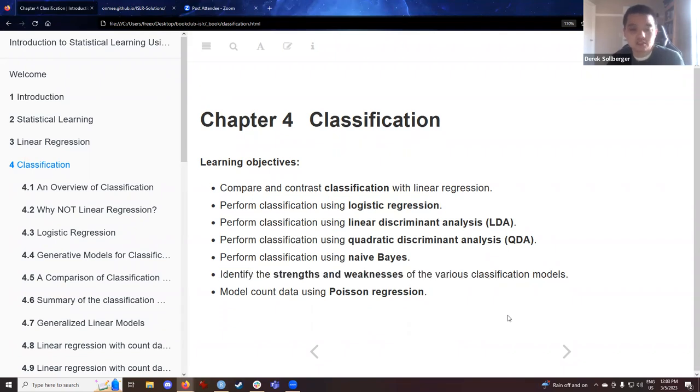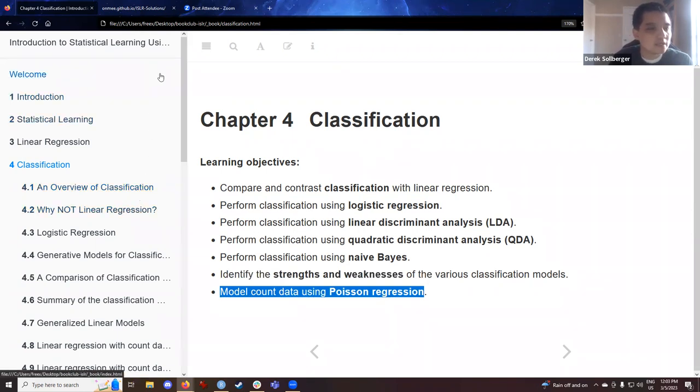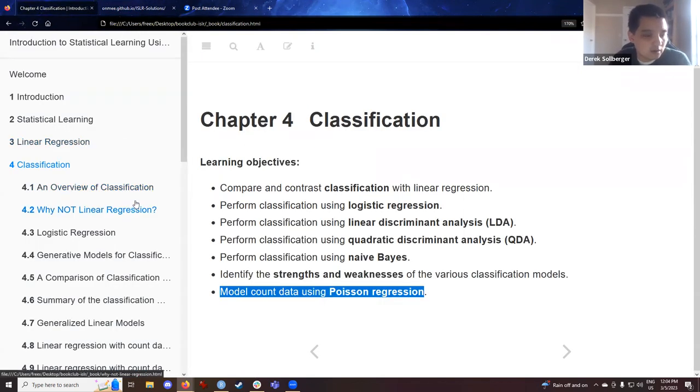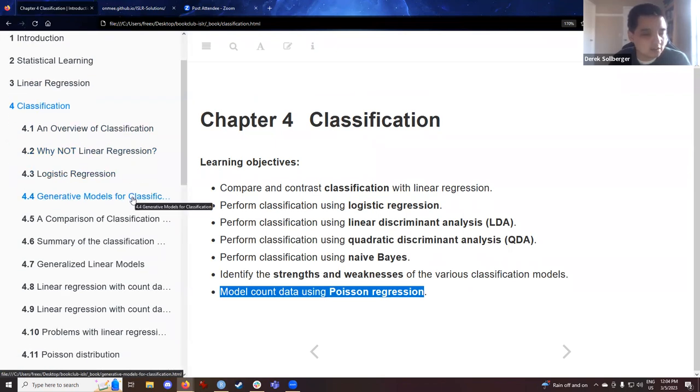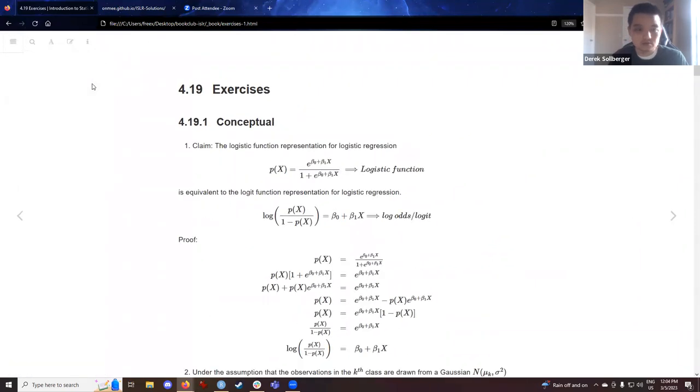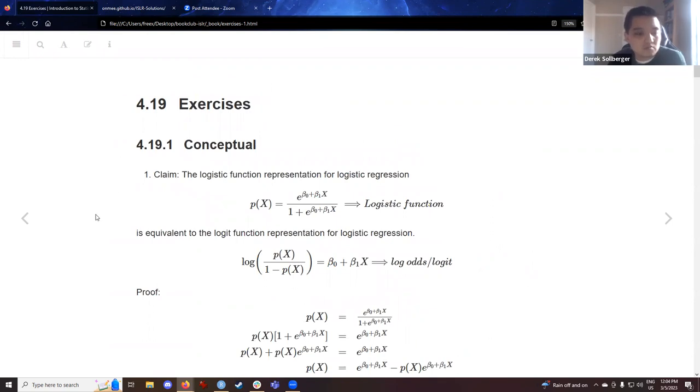In the exercises, we'll look at the strengths and weaknesses of various classification models. The exercises and solutions were placed on this GitHub repository belonging to a former cohort member. What I did was transfer them over to the BookDown site and added a few more lines of mathematics and a few more words. And as always, if folks have questions, feel free to use the Zoom chat or just unmute yourself.